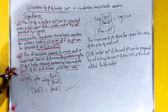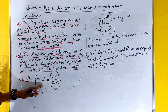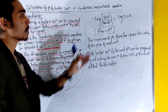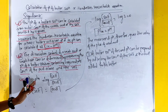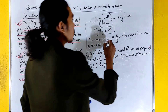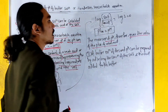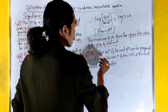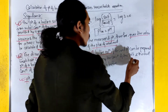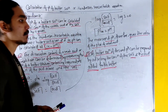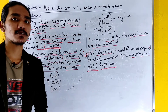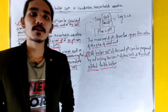When the concentration of salt equals the concentration of acid, the log of salt by acid equals zero, so pH equals pKa. The measure of pH therefore gives the value of pKa. A buffer solution of desired pH can be prepared by adjusting the concentration of salt and acid.